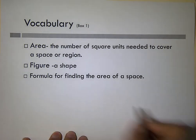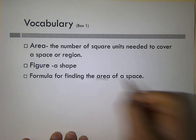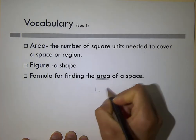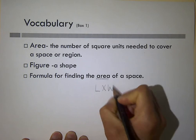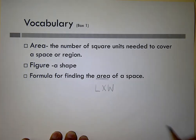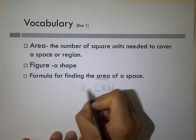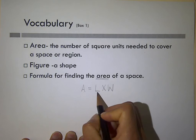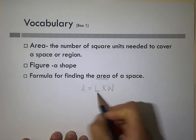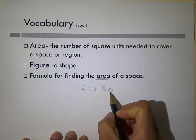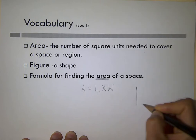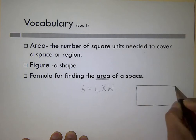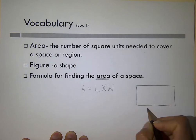When we are looking for area, we use the same formula. We multiply the length times the width, and that's how we find the area. A stands for area, L stands for length, and W stands for width. If I have a length and a width, I have either a rectangle or a square.